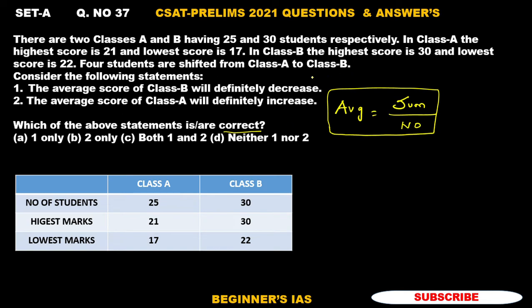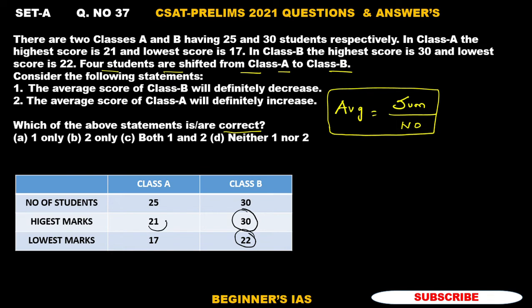Consider the first statement. Four students are shifted from class A to class B, which means the strength of class B will increase. We need to check the range of marks. The highest mark is 30 in class B and the lowest mark is 22, whereas the highest mark in class A is only 21. The range of marks in class A is less than the range of marks in class B, which means the new students must have marks less than the previous minimum marks of class B. Automatically, it will reduce the average of class B, which means it will definitely decrease.